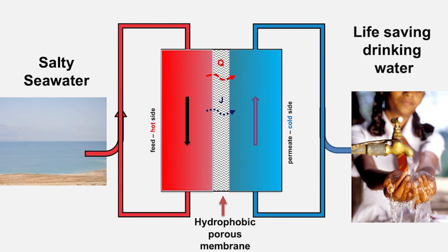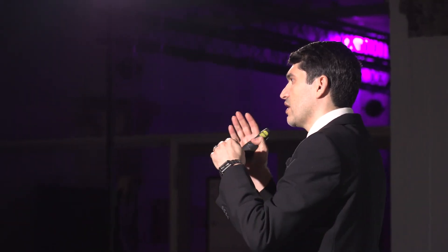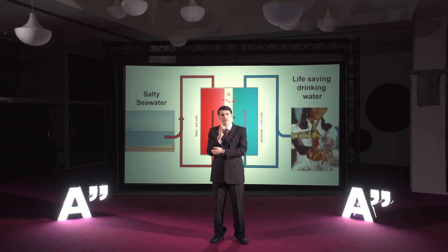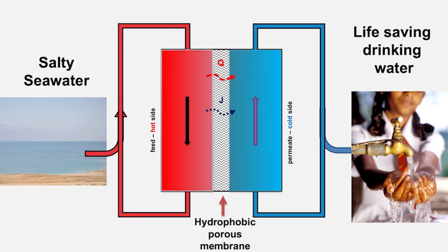Nanofibrous membranes can also be used for producing drinking water from salty seawater. The seawater at high temperature, around 70 to 80 degrees centigrade, is circulated on one side of this membrane. The heart of the machine is the hydrophobic membrane made of nanofibers, and cold water is circulated on the other side. The membrane will not allow salty water to pass through, but water can evaporate on the membrane surface and transport to the other side, where it condenses to gradually produce drinking water. The energy for the system can be provided by solar radiation.